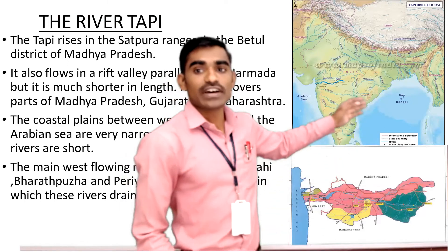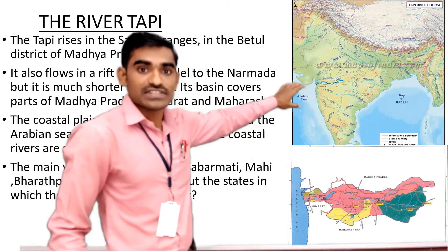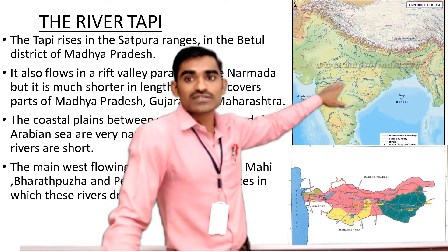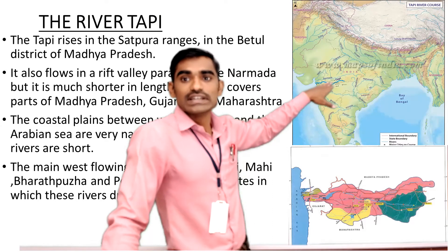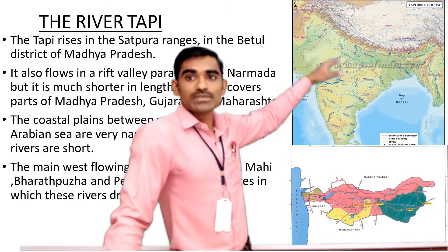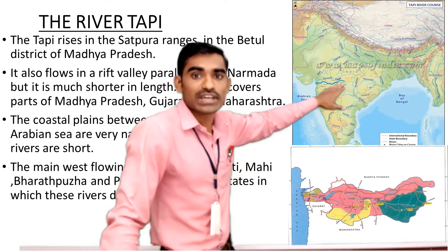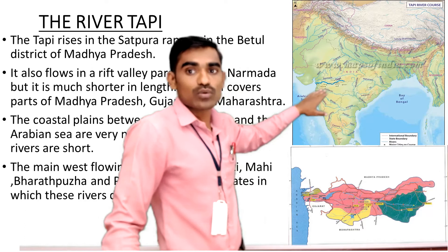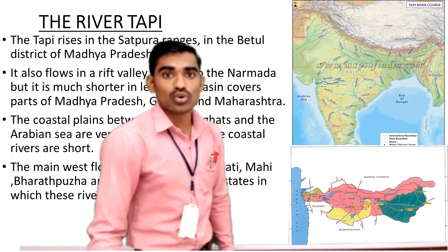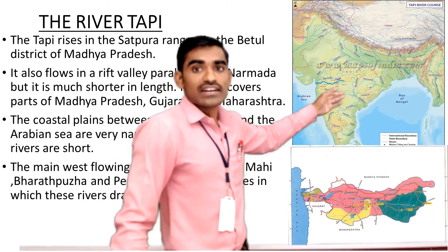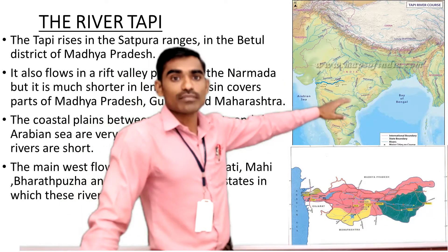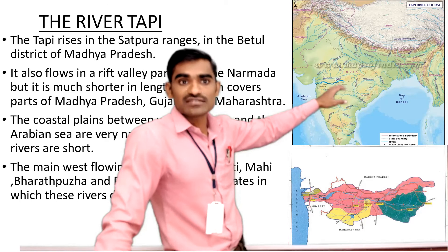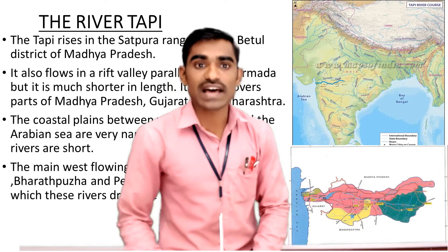The origin of Taapi river is in the Satpura ranges. While learning the physical features of India, we learned there are two hill ranges — they are better called hill ranges because they are not as high as the northern mountains. In the north you have the Vindhya mountains and in the south you have the Satpura mountain ranges, with the Narmada river flowing in between. The Taapi river originates in the Betul district of Madhya Pradesh, located within these Satpura ranges.